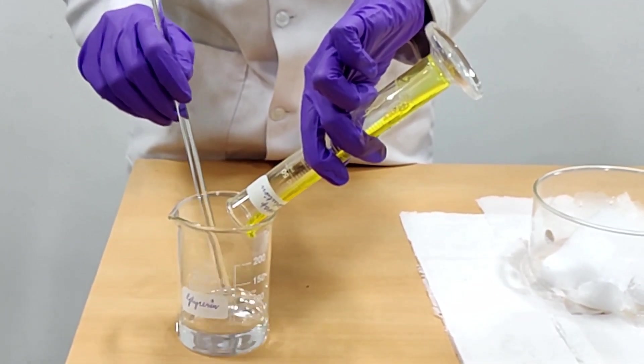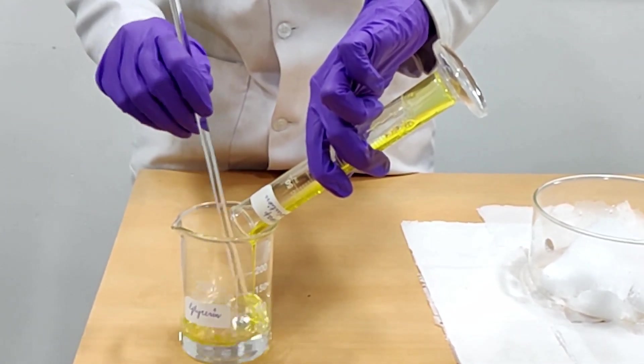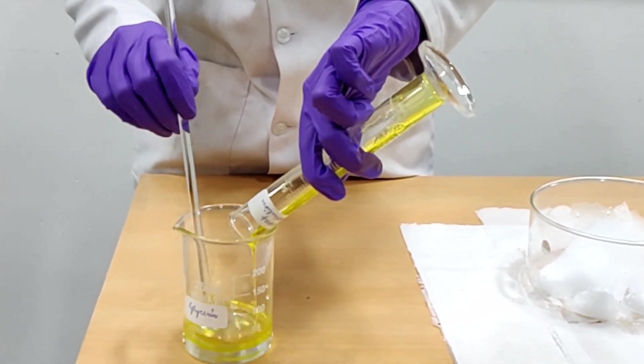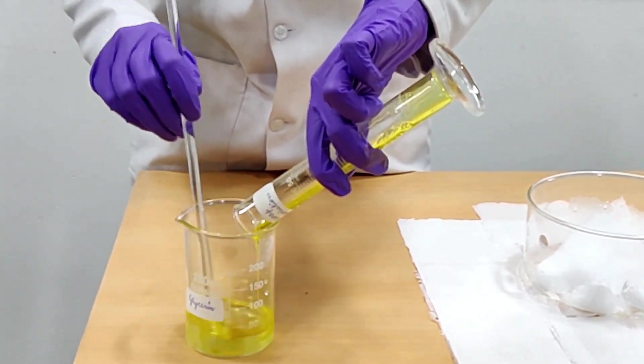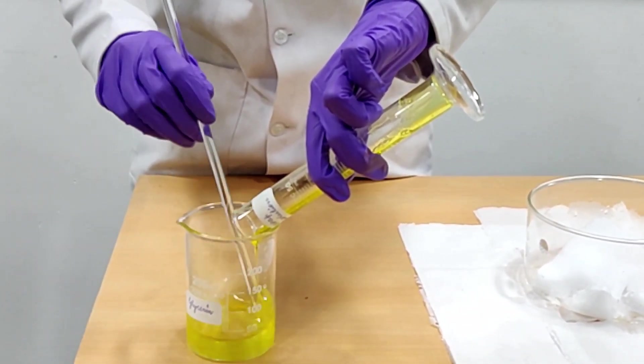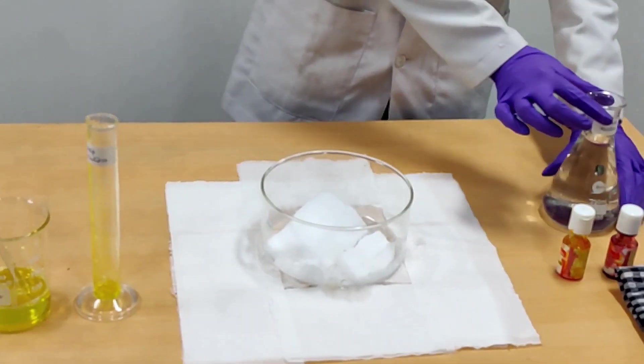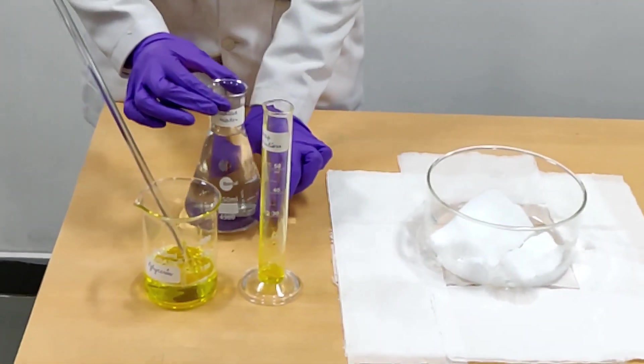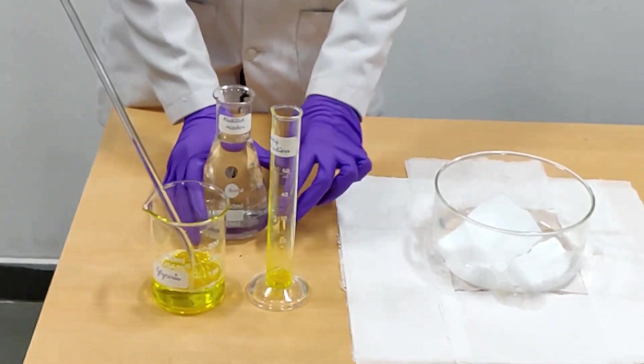we add 4 ml of soap solution to 100 ml of glycerine and stir it well using the glass rod. Add a small amount of distilled water to make the solution a bit dilute.